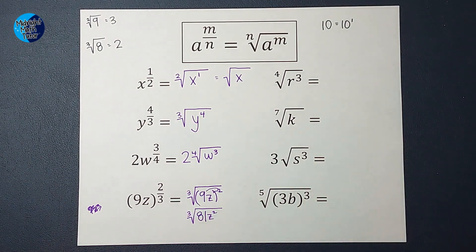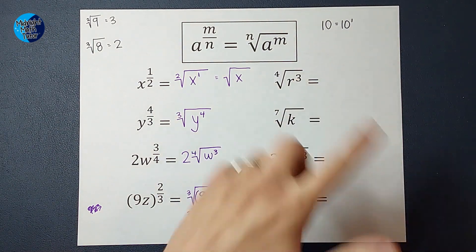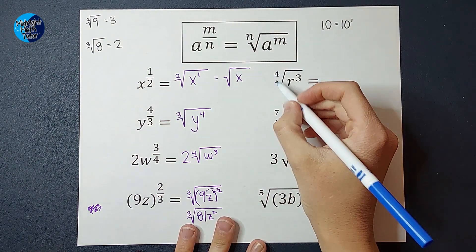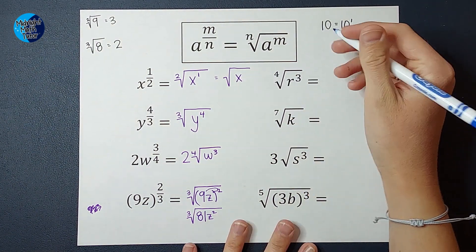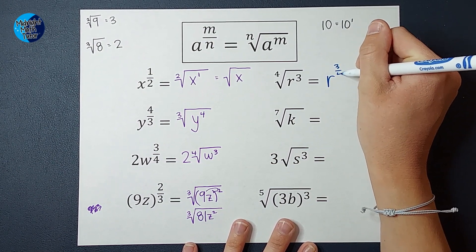Now we're going to go the other way. So we're going from a radical to a fractional exponent. So the fourth root of r to the third power is going to be r to the 3 fourths power.